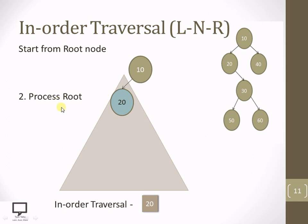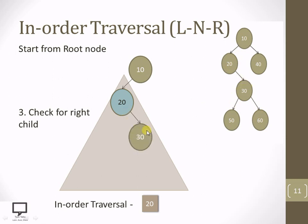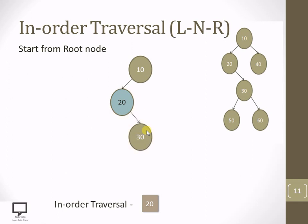So what will be my next step? Step number three is to check for a right child. Now let's check whether 20 is having a right child. Yes, 20 is having a right child. So we need to step down to the right child of 20. After moving to the right child, now this right child — which is 30 — is going to become the root node.